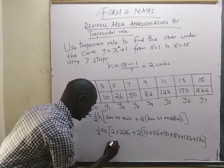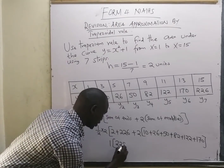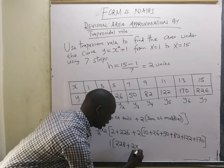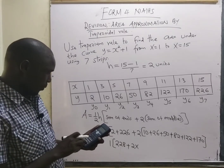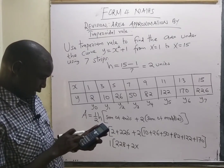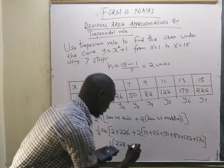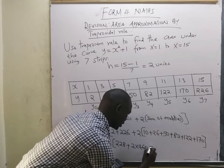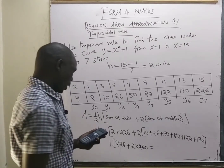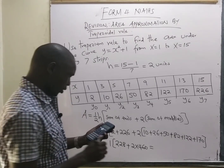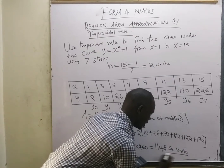Simplifying: ½ × 2 = 1. The sum of the ends is 2 + 226 = 228. The sum of the middles is 10 + 26 + 50 + 82 + 122 + 170 = 460, and 2 × 460 = 920. Therefore, 228 + 920 = 1148 square units, and that is the answer to this question.